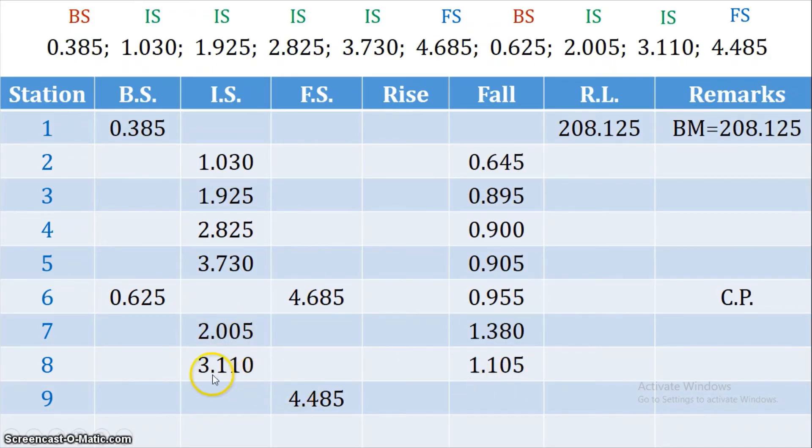The values are 1.105, then 3.110 minus 4.485 gives 1.375. That gives us all the fall column values filled in.